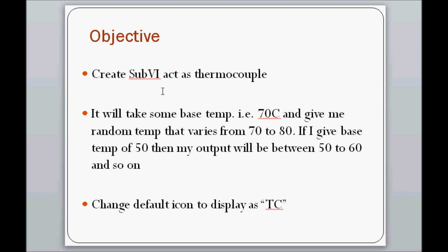My objective here is to create one Sub VI which acts as a thermocouple. A thermocouple can be used to get the temperature of a motor, boiler, or any similar equipment. It will take a base temperature — for example, if I give 70 degrees, it will give me an output between 70 and 80. And if I give a base temperature of 50, then the output will be 50 to 60, and so on.